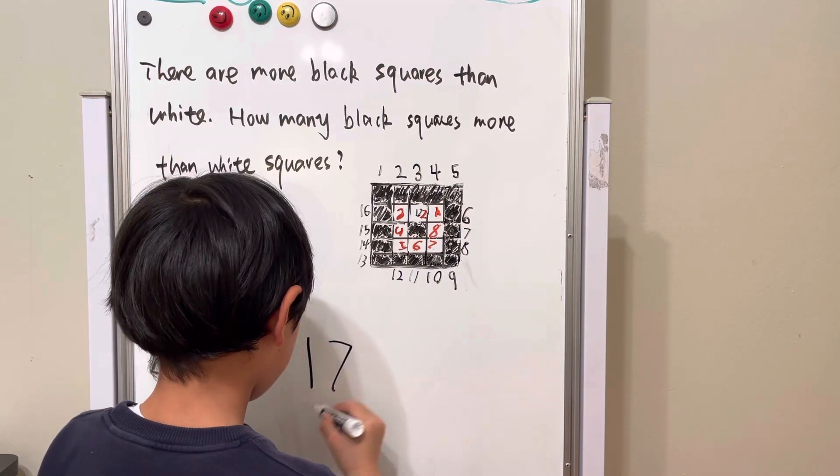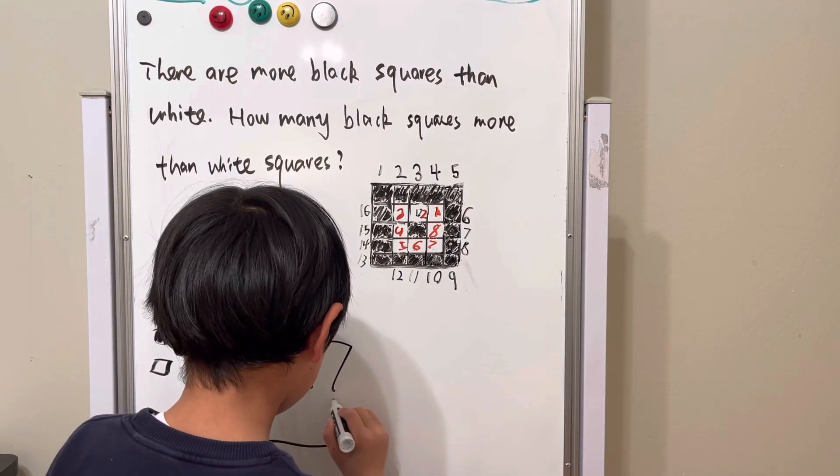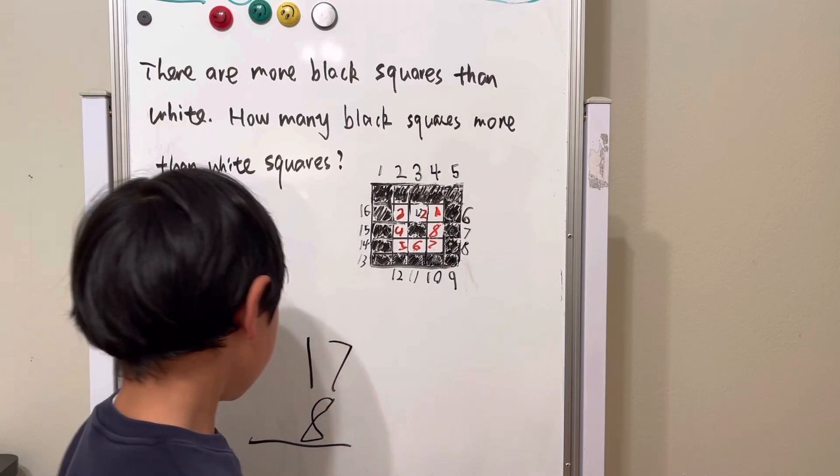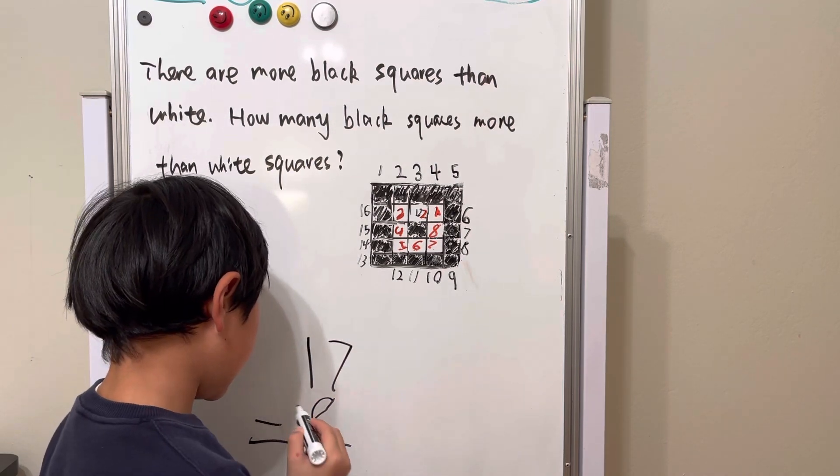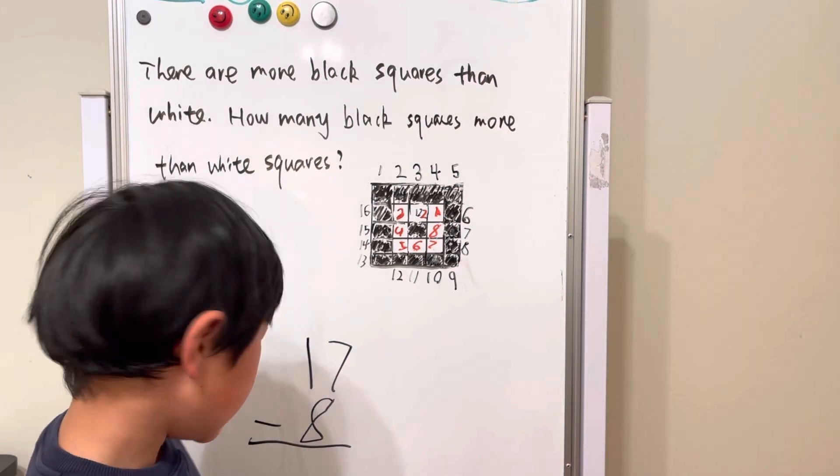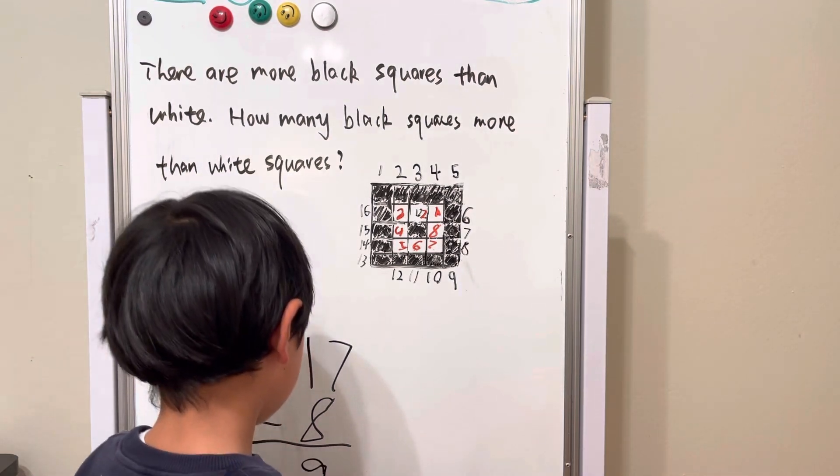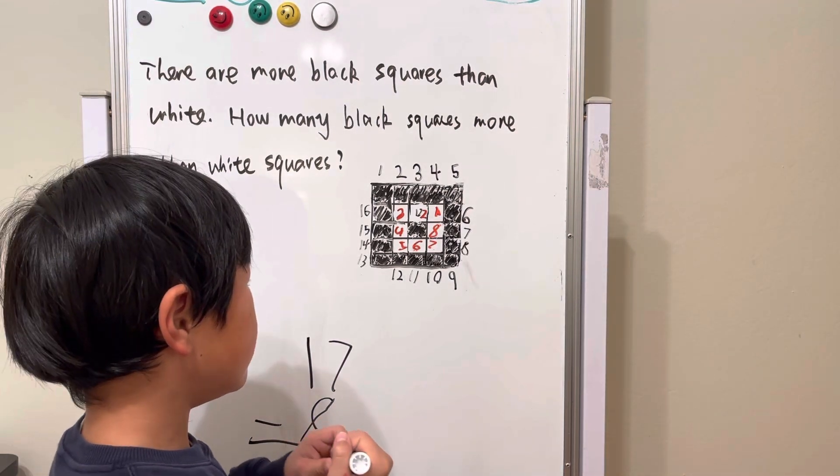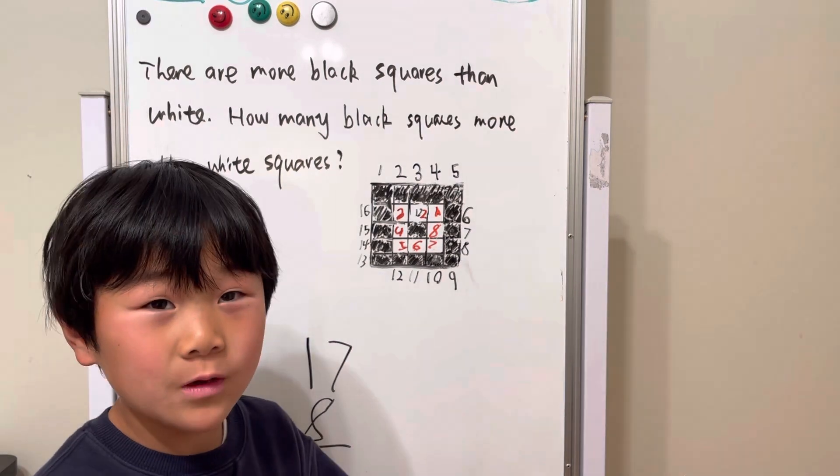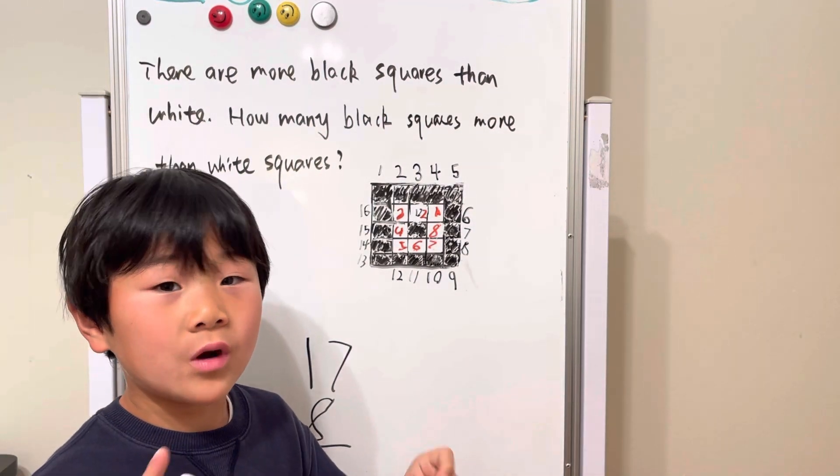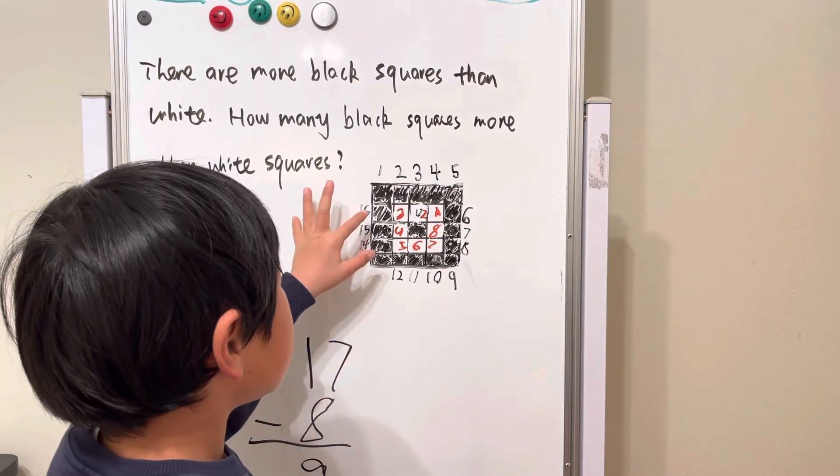So, seventeen minus eight equals nine. So, our answer would be nine in a problem like this too.